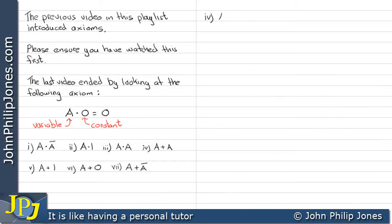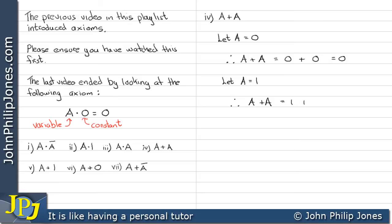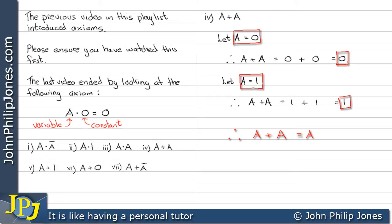Let's look at the next example which is A OR A. Let's make A equal zero. Therefore A OR A becomes zero OR zero, which gives a result of zero. Let A equal one. Therefore A OR A is one OR one, which gives one. When A was zero we got a result of zero, and when A was one we got a result of one. Therefore A OR A will always give the result of A. Here we can see another axiom.